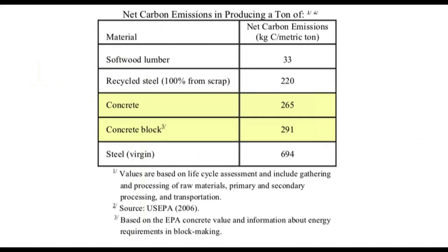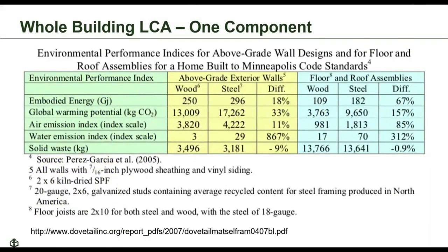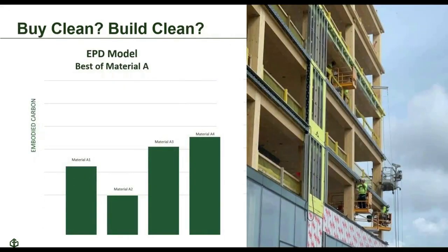So speaking of parking, it would be pretty easy to show lower impacts by removing parking from the structure of the building and putting it in the lot outside, or comparing an eight-story building to a ten-story building. In most cases, we're not really comparing apples to apples, and using something like ASTM 2921 to set those guidelines is pretty important. When we at AWC look at things, we tend to focus on the structure and envelope of the building, as those tend to have some of the biggest influences on the overall whole building LCA and also have some of the best available data.